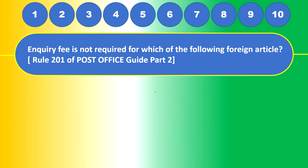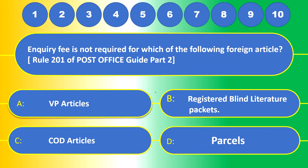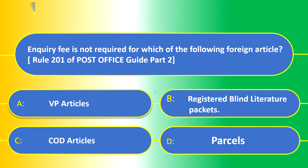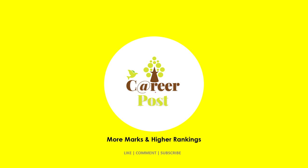Enquiry fee is not required for which of the following foreign articles — Rule 201 of Post Office Guide Part 2? Options: (a) VP articles, (b) registered blind literature packets, (c) COD articles, or (d) parcels. The answer is (b) registered blind literature packets — you need not pay an enquiry fee; it is free. Do subscribe to Career Post for the latest videos, click the bell icon, and if you liked the video, give a thumbs up and post a comment.